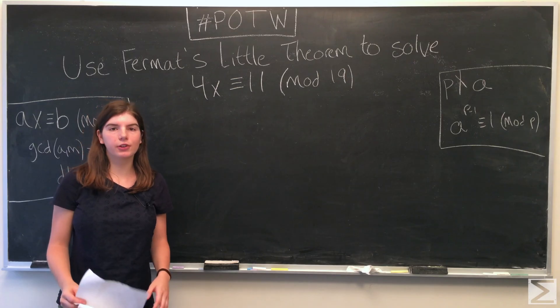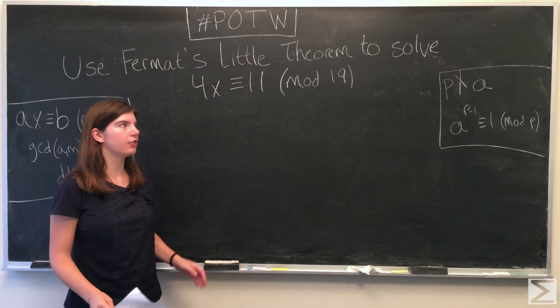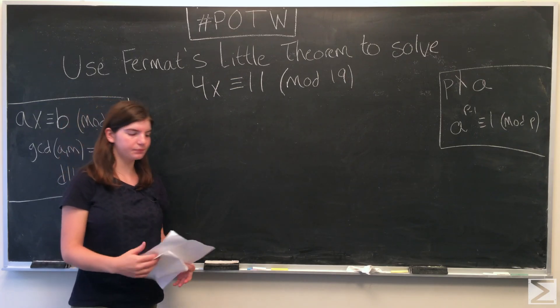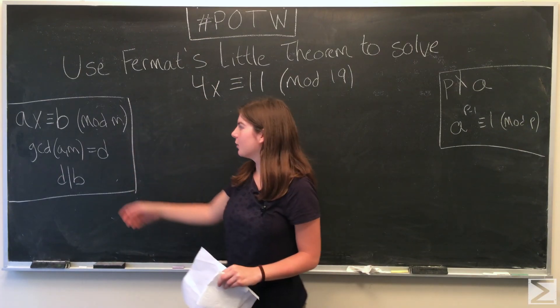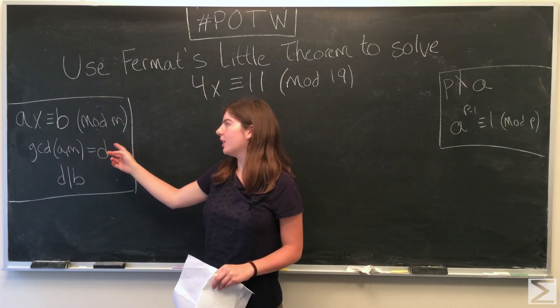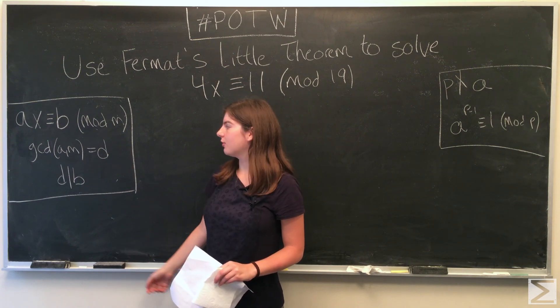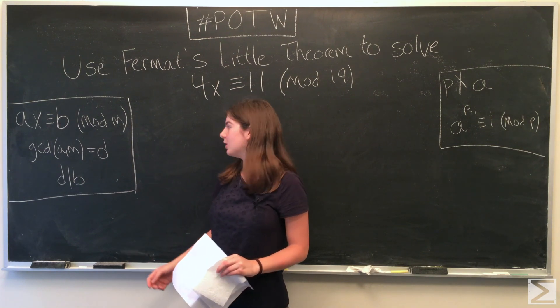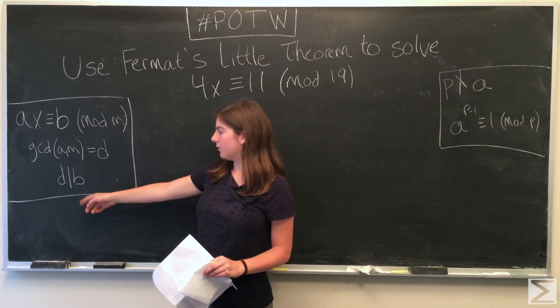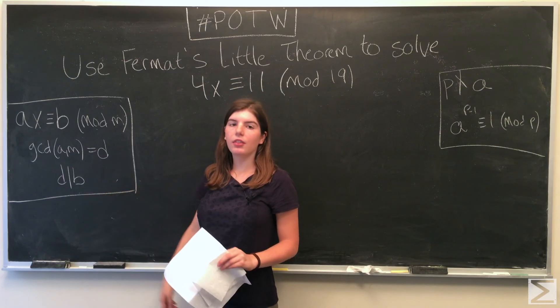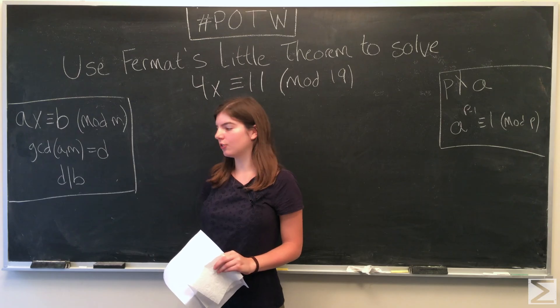Before we use it, we first want to check how many solutions this linear congruence is going to have. We have the linear congruence in the form of AX is congruent to B modulo M, and we let the greatest common divisor of A and M equal D. If D divides B, then there are exactly D solutions.